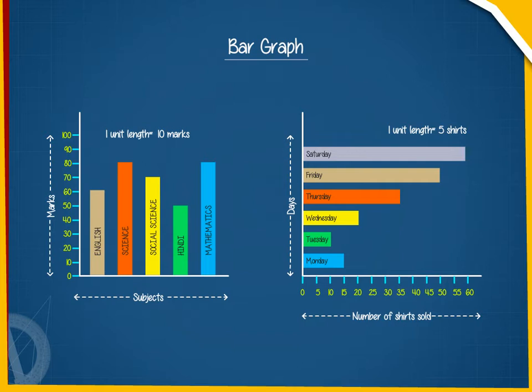In a bar graph, bars of uniform width are drawn horizontally or vertically with equal spacing between them. The length of bars represent data.